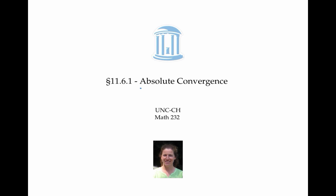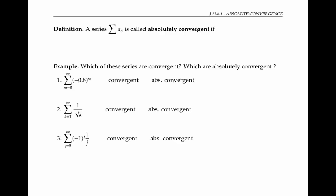This video defines absolute convergence and how it's related to convergence for a series. A series is called absolutely convergent if the series of absolute values of the terms converges.